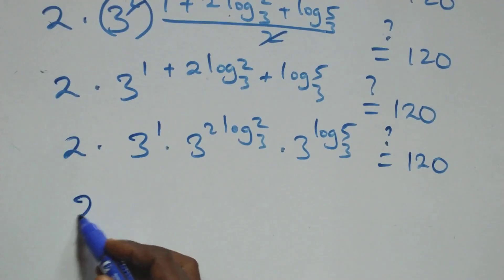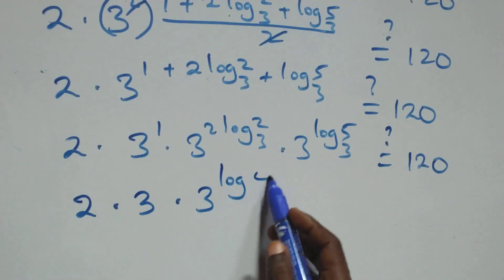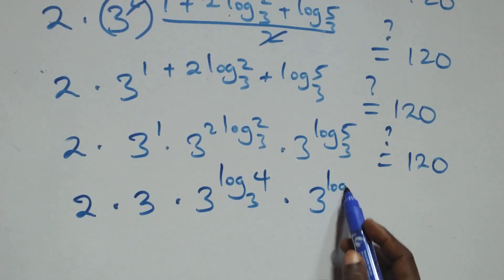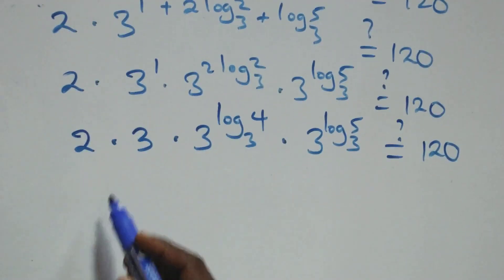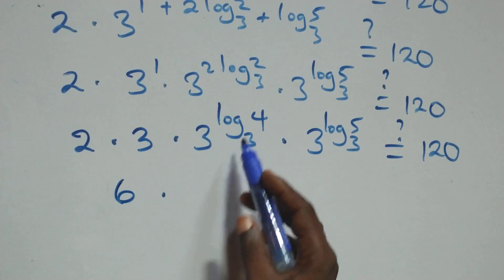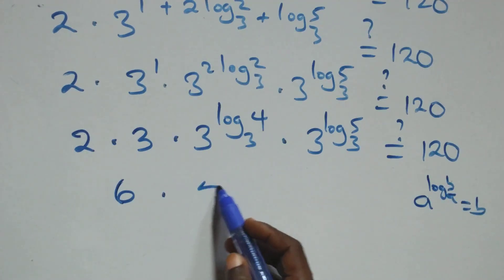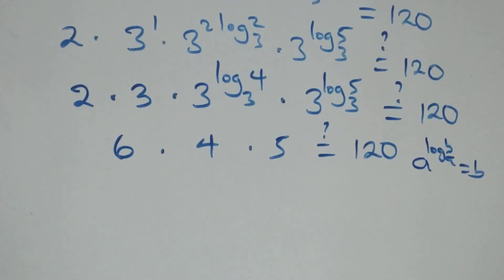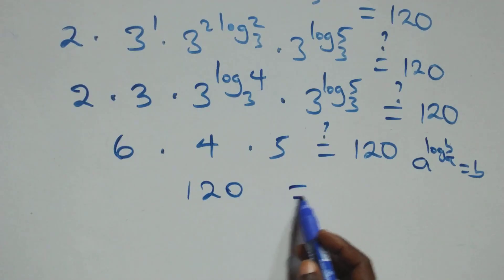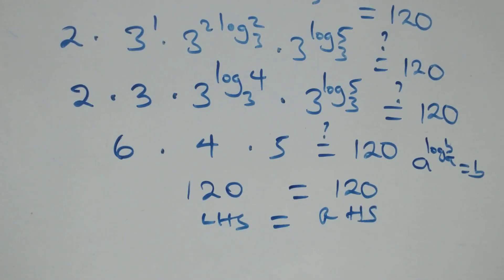Applying the laws of indices, this becomes 2 times 3¹ times 3 raised to power (log₃4) times 3 raised to power (log₃5), which should equal 120. Using the identity a raised to log_a(b) equals b, this becomes 2 times 3 times 4 times 5 — that is 6 times 4 equals 24, times 5 equals 120. The left-hand side equals the right-hand side, which is 120.